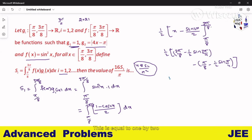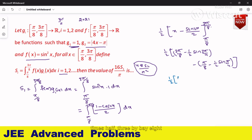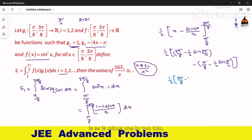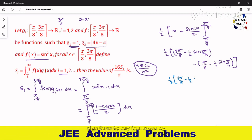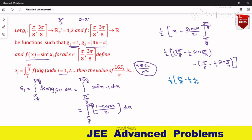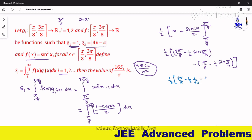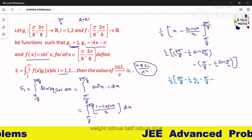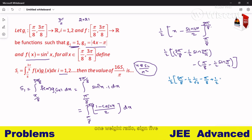This equals 1 by 2 times of 3π/8 minus 1 by 2 times sin 3π/4, which is 1 by root 2, minus π/8 minus plus 1 by 2 into sin π/4, which is 1 by root 2.